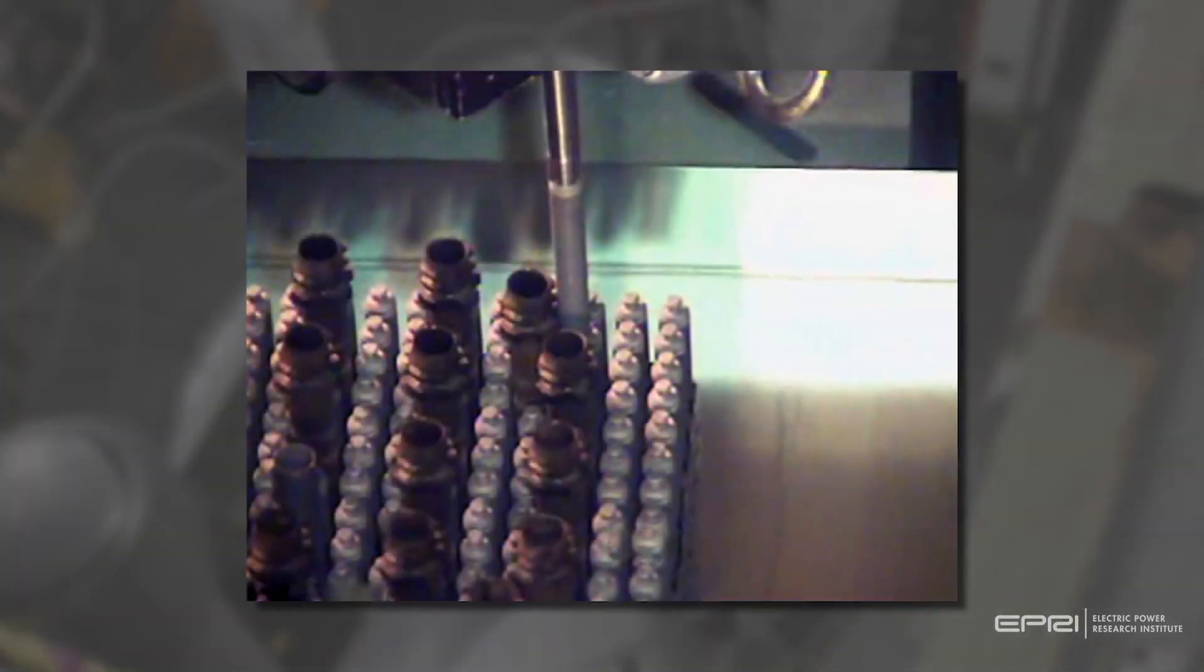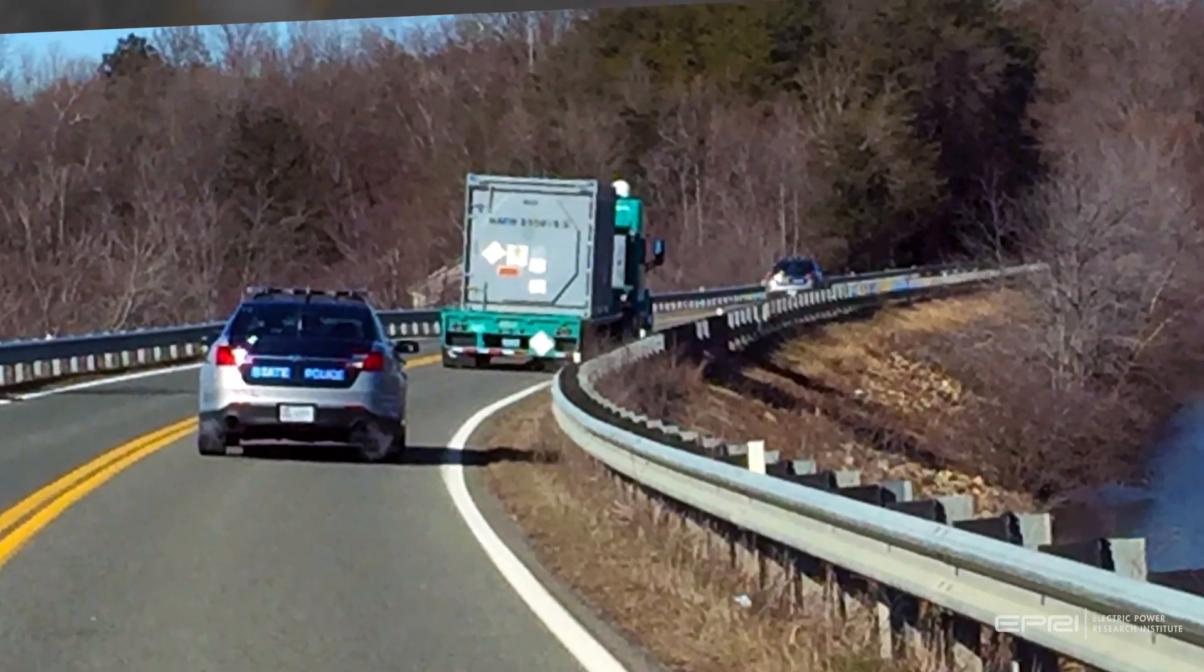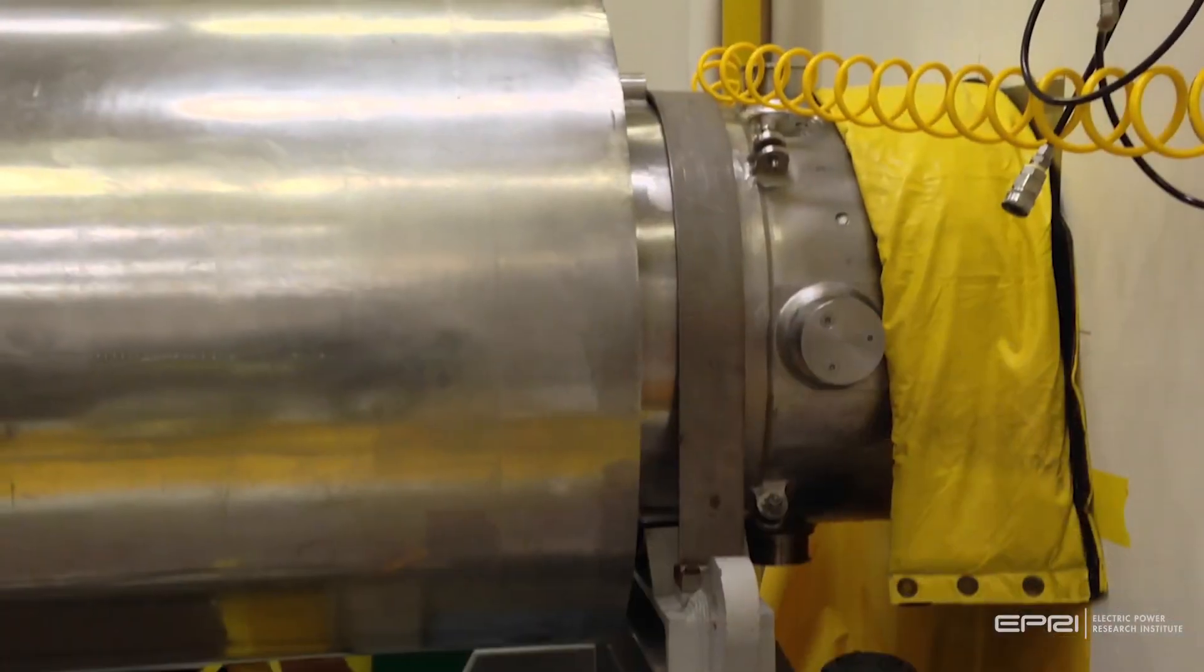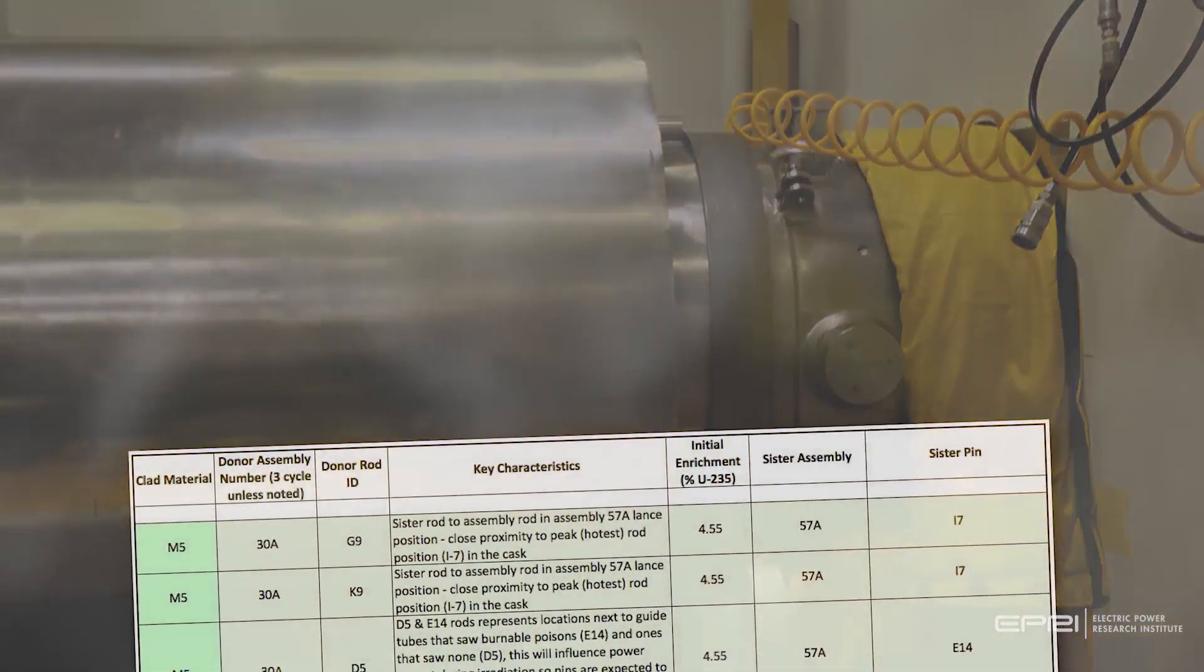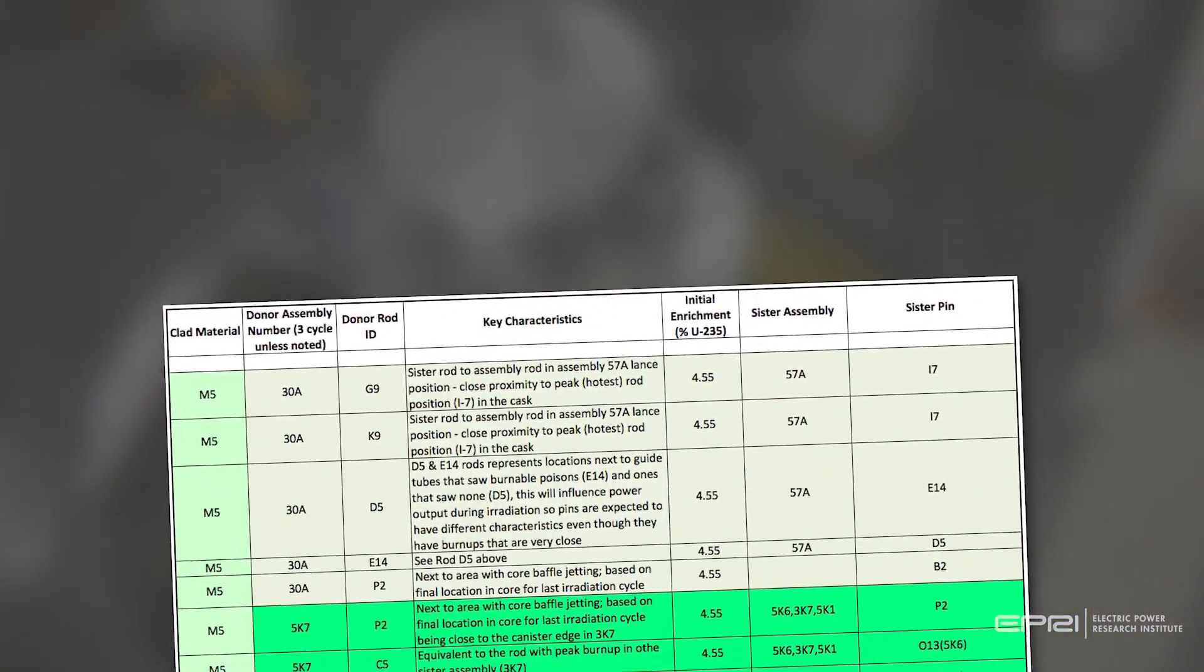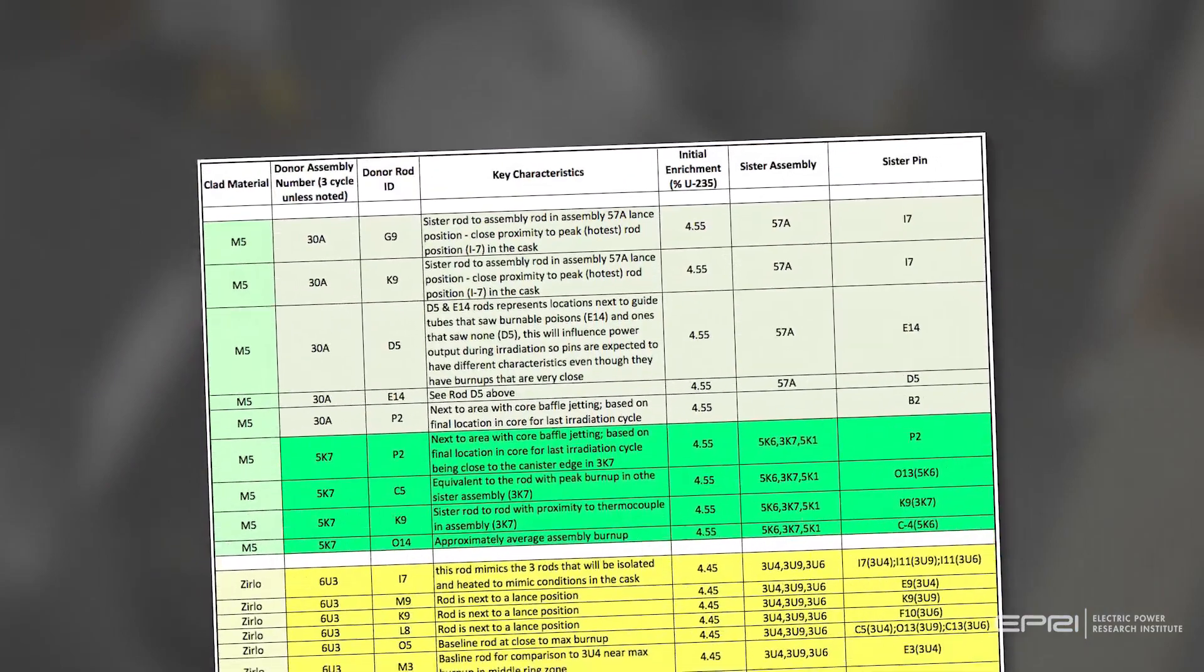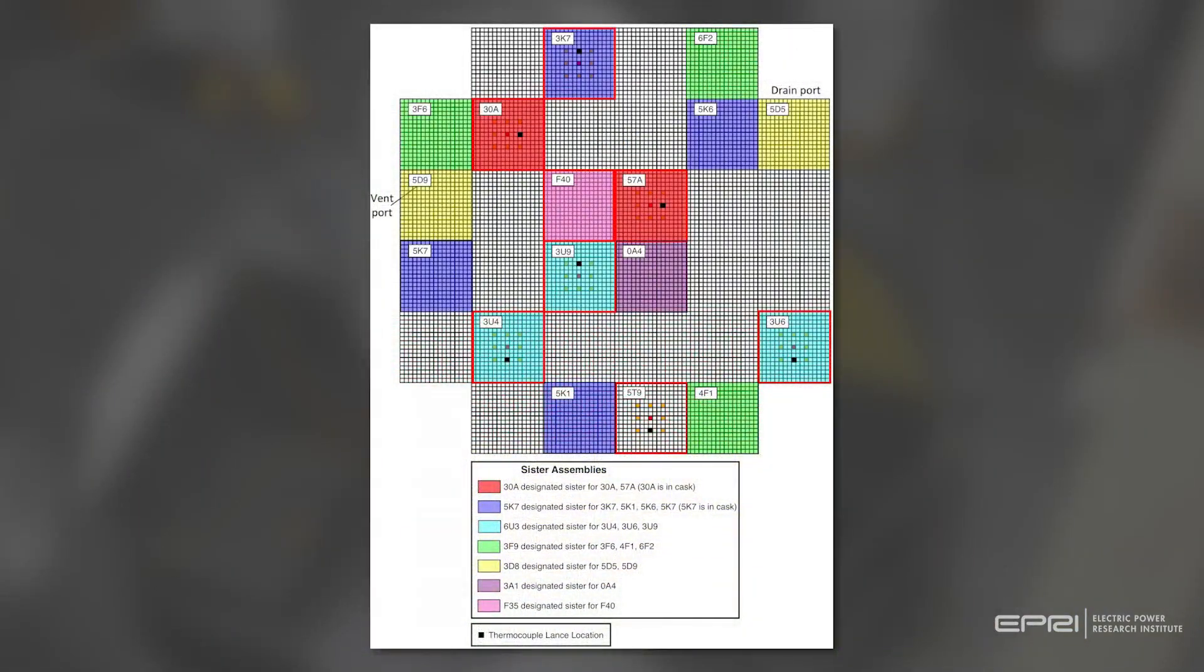Areva and Westinghouse extracted sister rods from high burn-up assemblies at North Anna and shipped them to Oak Ridge National Laboratory. Working in cooperation, Dominion Energy Virginia, EPRI, DOE, and the National Laboratories selected the sister rods, ensuring they have the same characteristics as the fuel rods loaded inside the cask.